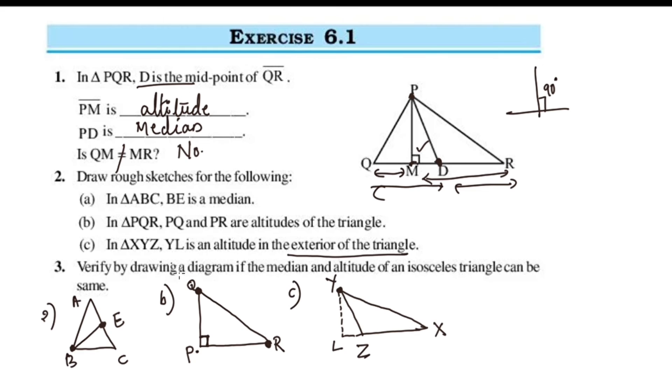The third question: Verify by drawing a diagram whether the median and altitude of an isosceles triangle can be the same.